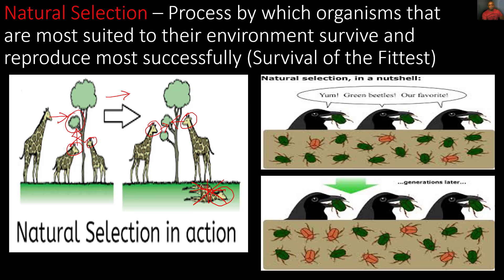A longer neck is much more fit than a short neck in the giraffe population. Looking at the next diagram, birds are eating the green beetles but not the brown beetles, because the brown beetles camouflage with the background. In the next generation, there are more brown beetles because birds more easily spot and eat the green beetles. Over continuing generations, there will be more and more brown beetles and fewer and fewer green beetles.